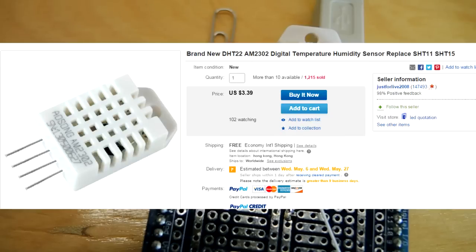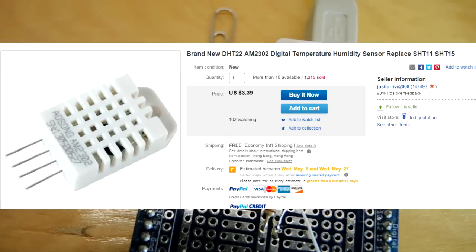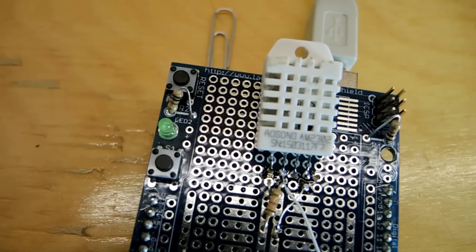This particular one here, let me pop up the eBay listing. It's $3.40, called the Asung AM2302. More commonly it seems to be known as the DHT22, at least in the software programs that have been written for it.